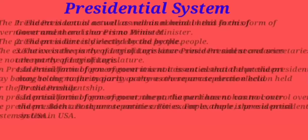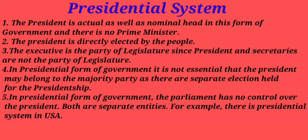Now the second point we are going to study is the presidential system. A presidential system is a democratic and republican government in which a head of government leads an executive branch that is separate from the legislative branch. This head of government is in most cases also the head of state, which is called the president.